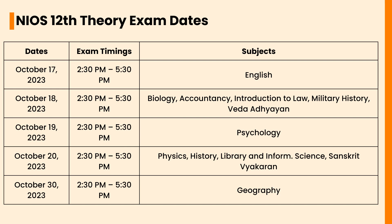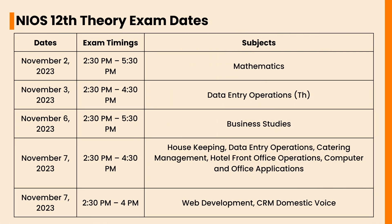On October 30, 2023, the exam timing will be 2:30 PM to 5:30 PM. The subject is Geography. In November 2023, the timings are 2:30 PM to 5:30 PM and the subject is Mathematics. On November 3, the timings are 2:30 PM to 4:30 PM and the subject is Data Entry Operations. On November 6, 2023, the exam timings are 2:30 PM to 5:30 PM and the subject is Business Studies.